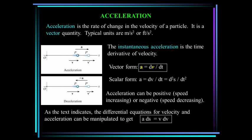Next, we have acceleration. That is the rate of change of the velocity of a particle. It is also a vector quantity with units of meters per second squared or feet per second squared. Now, the instantaneous acceleration is the time derivative of the velocity, so it's the time rate of change of the velocity, dv/dt.